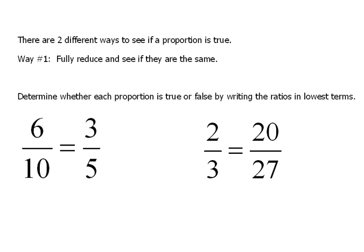Okay, our first way to determine whether a proportion is actually true or not is just to treat them as fractions. We can reduce fractions into their fully simplified state and then we can see much easier if they are in fact the same thing or not. So, let's do these two problems using that method. This says determine whether each proportion is true or false by writing the ratios in lowest terms.